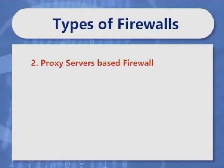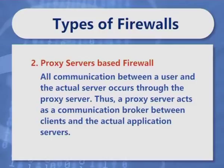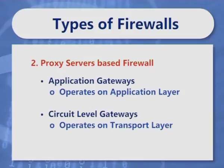The next type of firewall is proxy servers. A proxy service is an application that redirects users' requests to the actual services based on an organization's security policy. All communication between a user and the actual server occurs through the proxy server. Thus, a proxy server acts as a communication broker between clients and the actual application servers. Proxy servers can operate at either the application layer or the transport layer. Thus, there are two classes of proxy servers: application gateways, which operate at the application layer, and circuit level gateways, which operate on the transport layer.